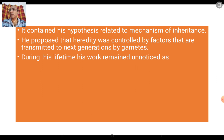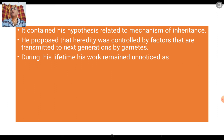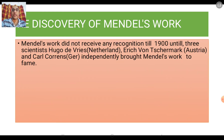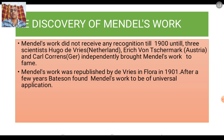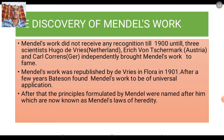During his lifetime his work remained unnoticed — perhaps because his research paper was published in an obscure journal, or perhaps because he was well ahead of his time. It remained unnoticed until 1901, when through the efforts of Hugo de Vries of the Netherlands, Erich von Tschermak of Austria, and Carl Correns of Germany, his work resurfaced and gained universal acceptance. Mendel's work was then republished by de Vries in Flora in 1901.